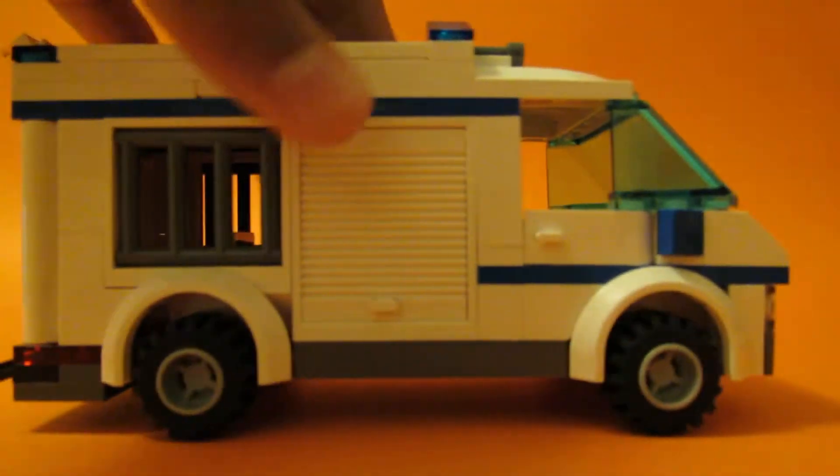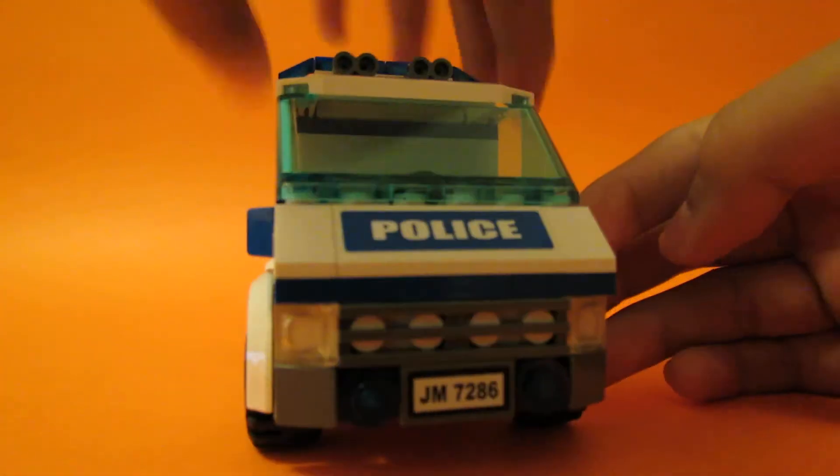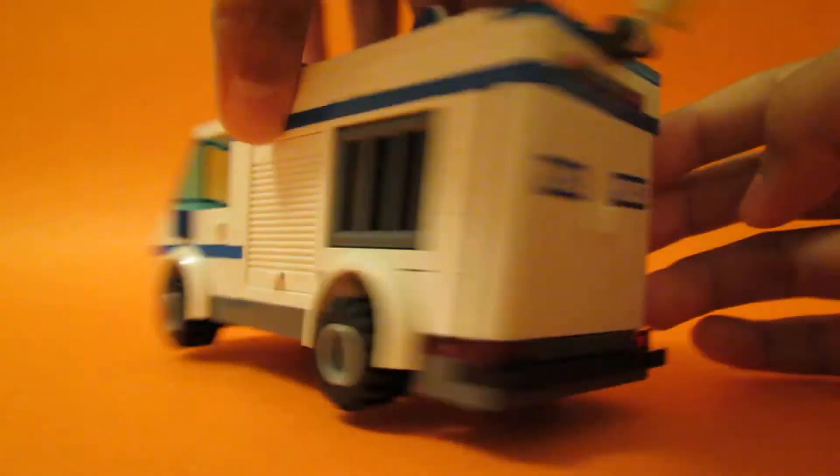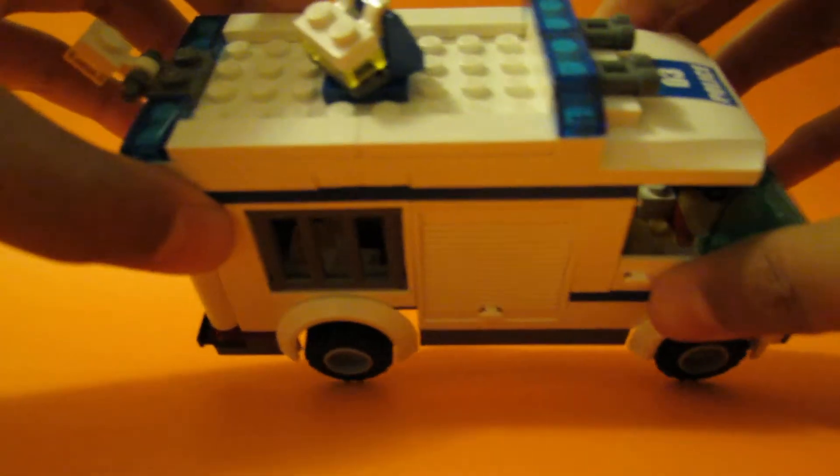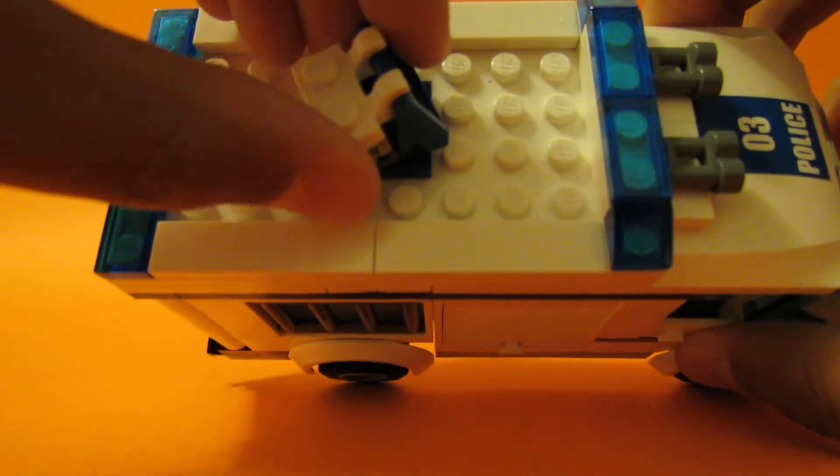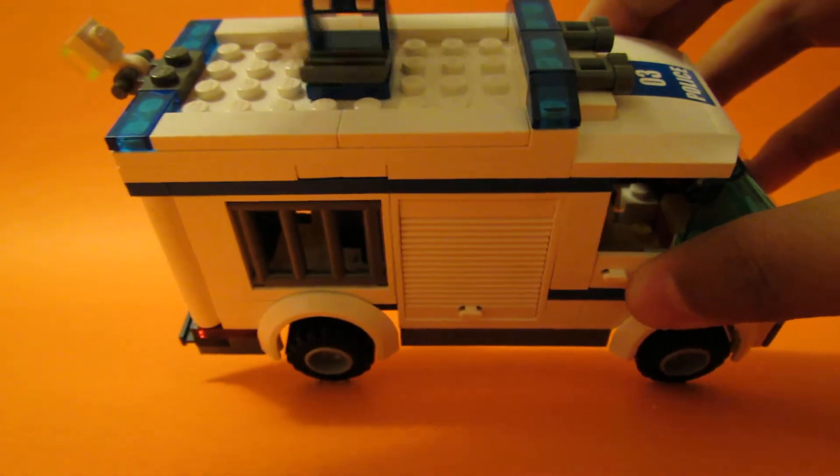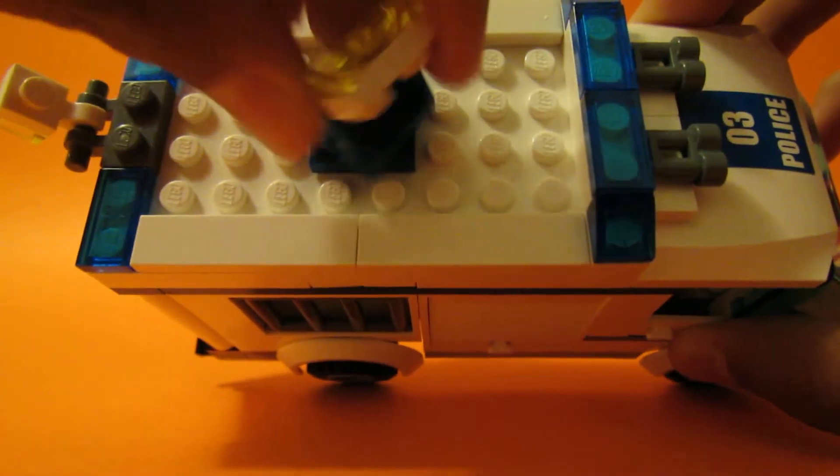Here is the prisoner transport. This is how it looks all around. From the top, it has a spinning light. It spins like this.